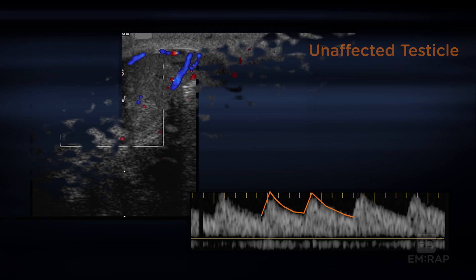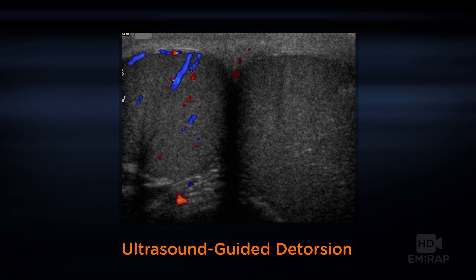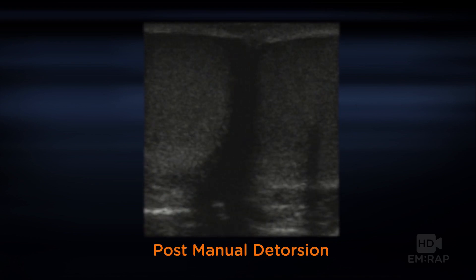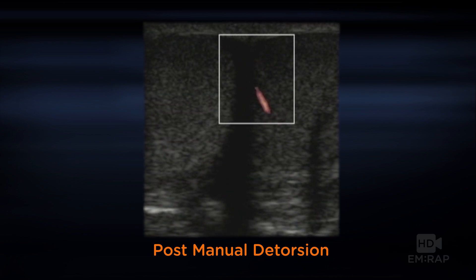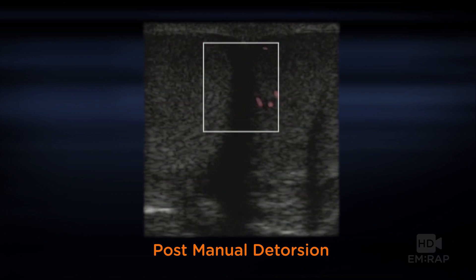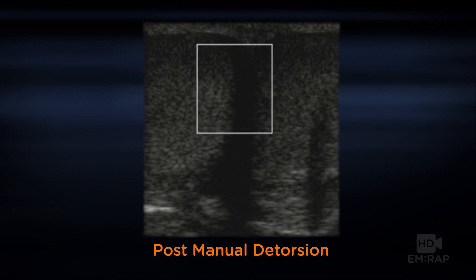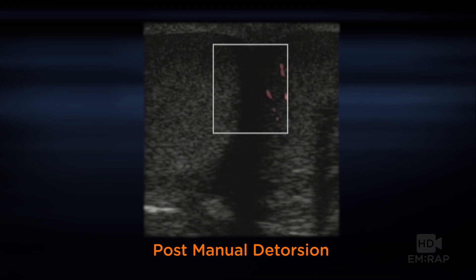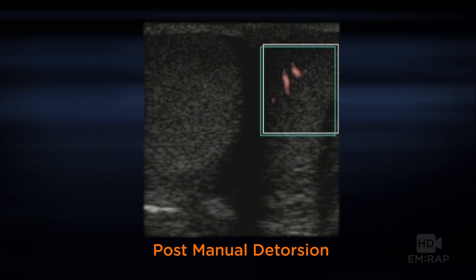Here's a case from a couple years ago. A young male was seen at a clinic, ultrasounded there, found to have no flow in his left testicle, diagnosed with torsion, and sent to the emergency department. By the time he arrived, he was at about four to five hours of constant pain. I performed an ultrasound-guided manual detorsion — opening the book — and confirmed that blood flow had returned. Comparing to the opposite side, the torsed testicle was hyperemic, which is expected after torsion, and I used that to guide when to stop.